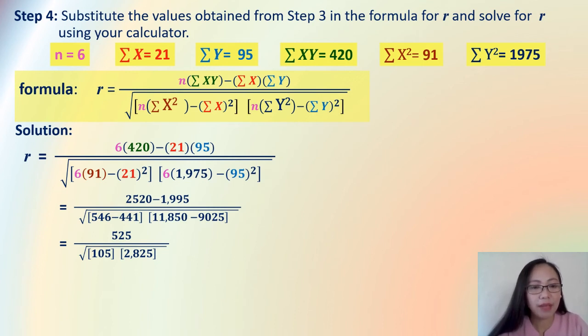We subtract 2,520 minus 1,995. You have 525. And in the denominator, we have 546 minus 441. We have 105. 11,850 minus 9,025. You have 2,875.